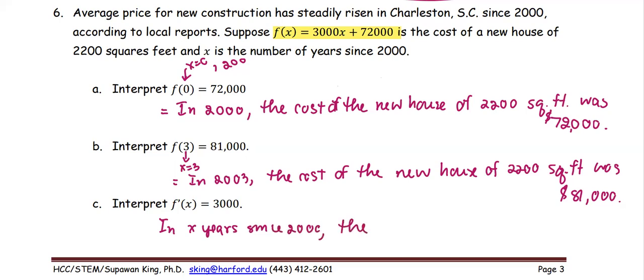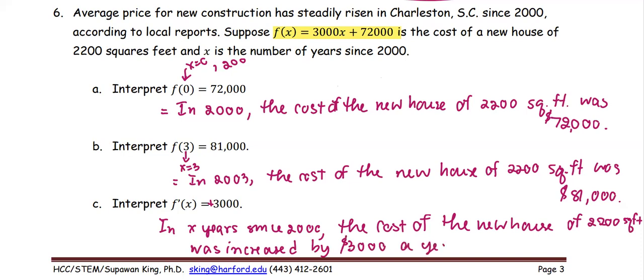the cost of the new house of 2200 square feet was increased by $3,000 a year. So every year it increased by $3,000. After x years since 2000, the cost increased by $3,000 per year.